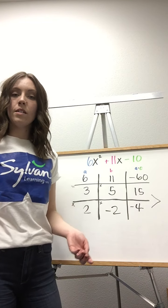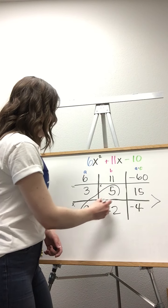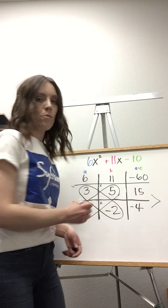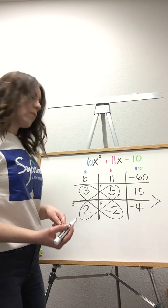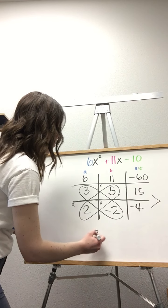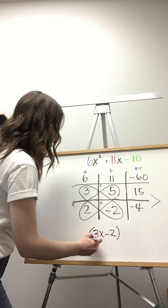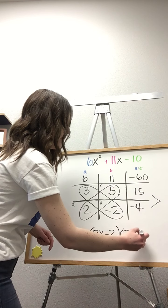Now once we have all the boxes filled in, we're going to circle these two diagonals. And these will be the numbers we'll use to figure out the factored form of our original quadratic. So I'll start by writing 3x minus 2, then 2x plus 5.